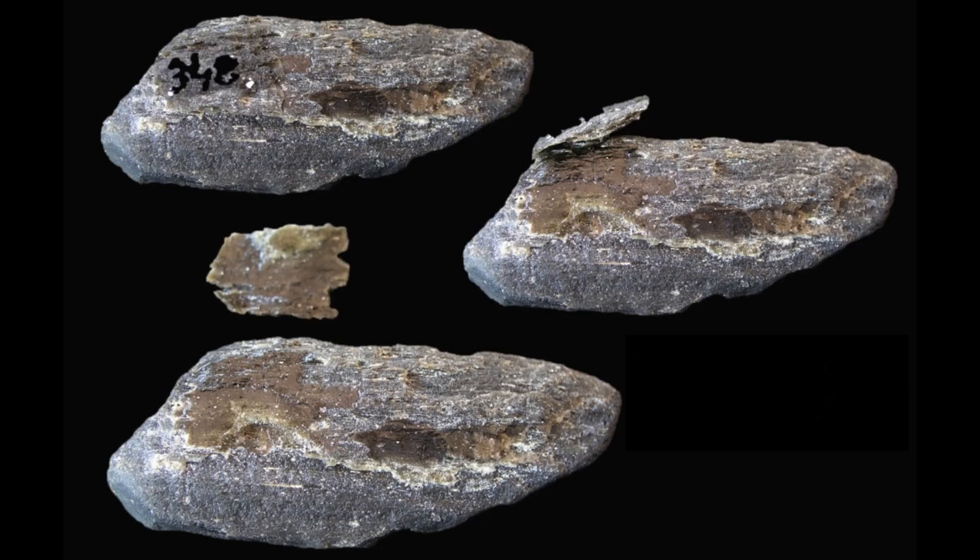Spalling on Muang Nong tektite with both main body and spall intact. Micrograph of spalling around a bubble in a splash form tektite showing Schlieren.